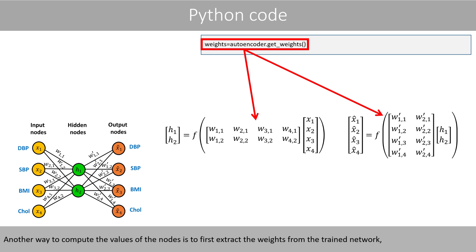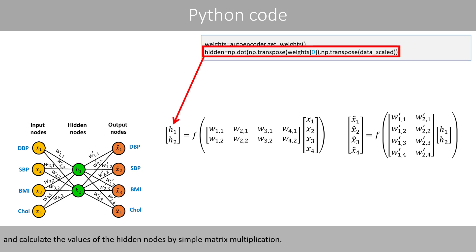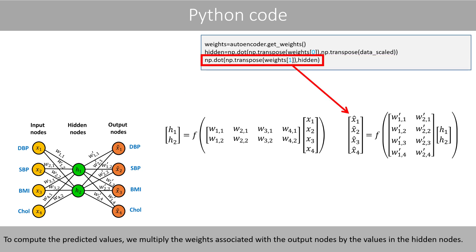Another way to compute the values of the nodes is to first extract the weights from the trained network, and calculate the values of the hidden nodes by simple matrix multiplication. To compute the predicted values, we multiply the weights associated with the output nodes by the values in the hidden nodes.